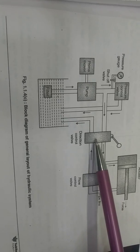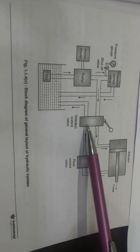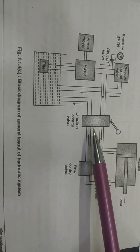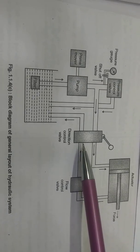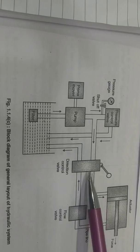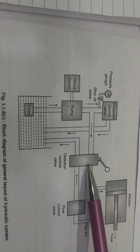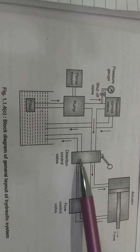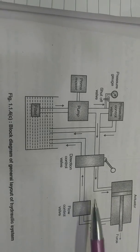The next component of the layout is the direction control valve. There are different types of direction control valve — it may be 3/2, 4/2, or 5/2. As per the application we can use the appropriate direction control valve. The main function of the direction control valve is to change the direction of the flowing fluid inside the circuit, so that we can obtain the movement of the actuator in different directions.